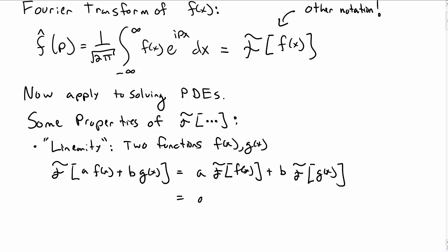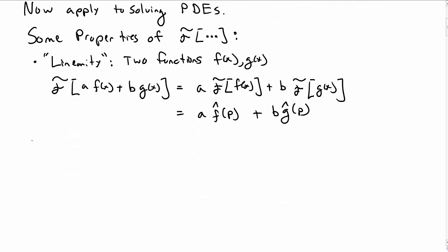We could actually write this in another way, we could write this as a f hat of p plus b g hat of p, using the other notation that we typically use for Fourier transform, which cleans things up quite a bit. So that's a useful property.